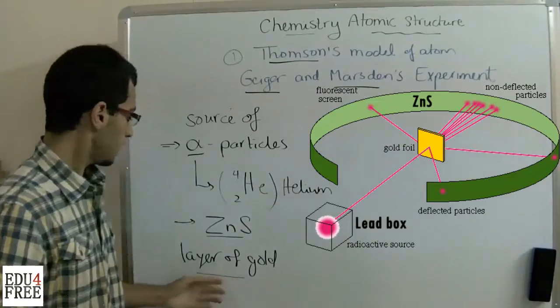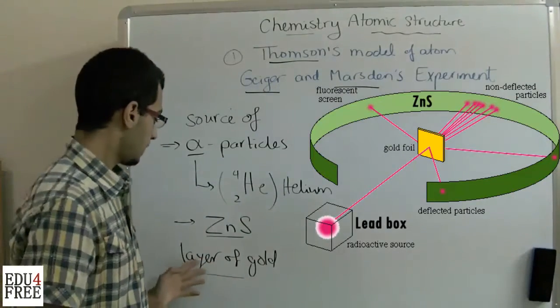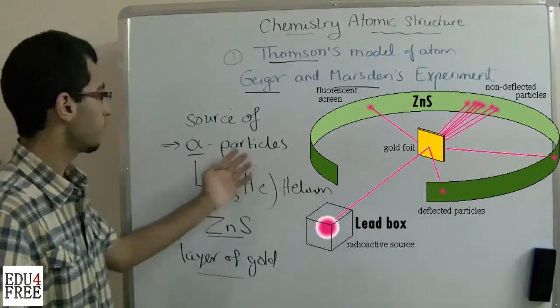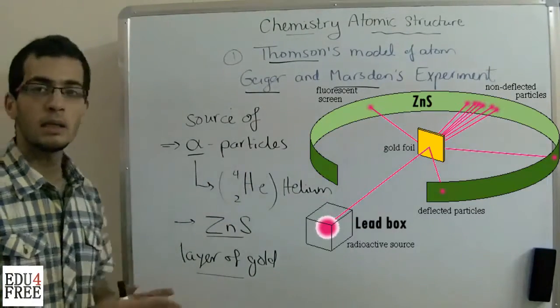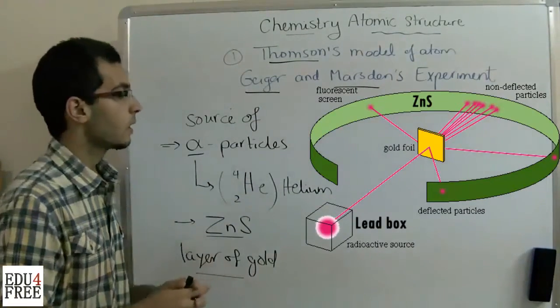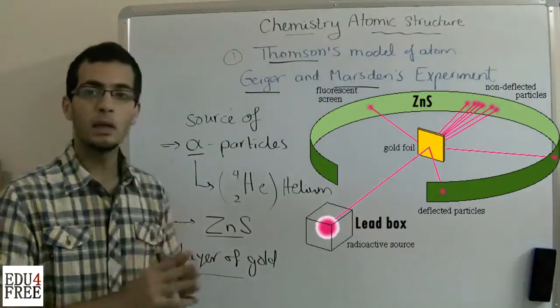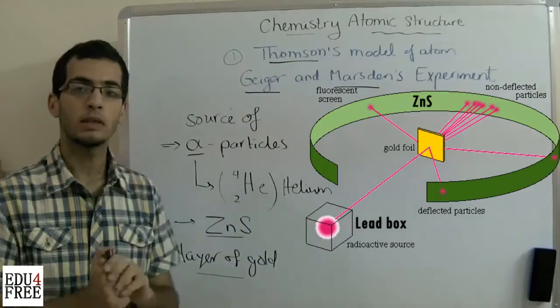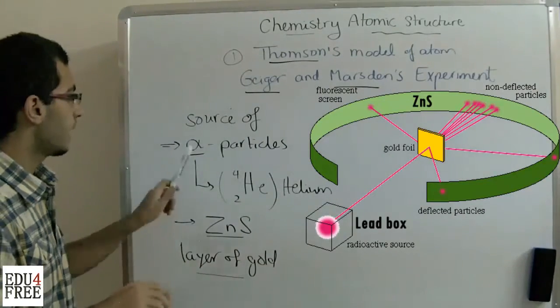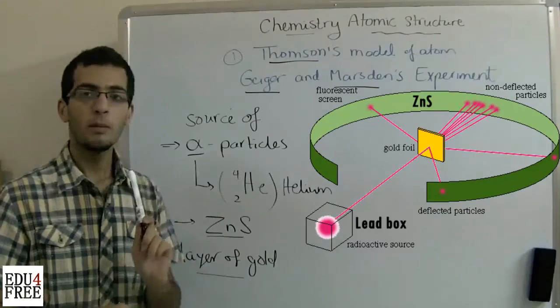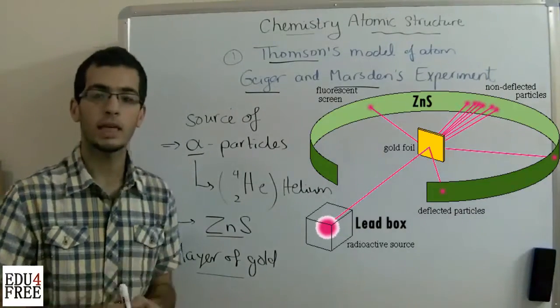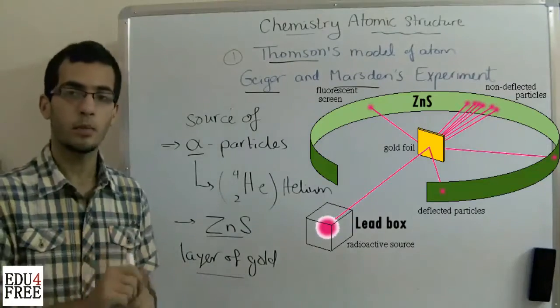So when they put a layer of gold in front of the alpha particle ray, something changed. Some glowing points remained as they were, so this indicates that the alpha particles passed through the layer of gold and hit the metallic sheet at the same points.